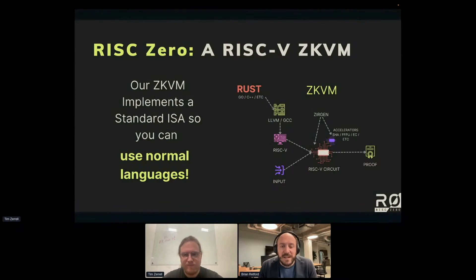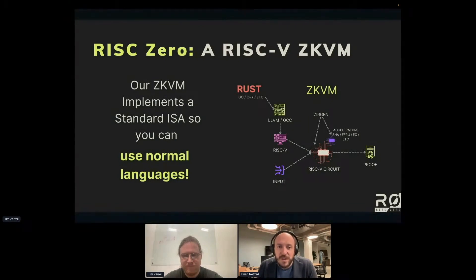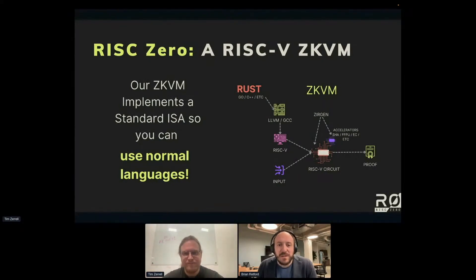The cool thing about this is that instead of making your own language, making up your own ISA, and writing your own compiler, you can use LLVM and/or GCC and in theory any language you want. We've initially focused on Rust support — we're trying to build a really usable and idiomatic way to build ZK programs in Rust. That's the focus of this workshop that Tim and Jeremy are going to be walking you through, and there's a bunch of other stuff we'll be covering about RISC-V in other workshops.